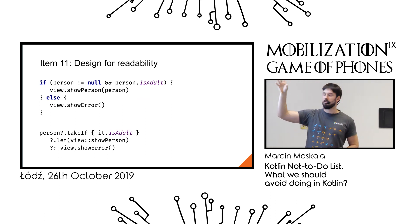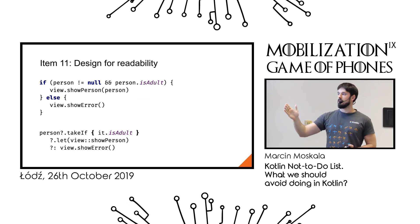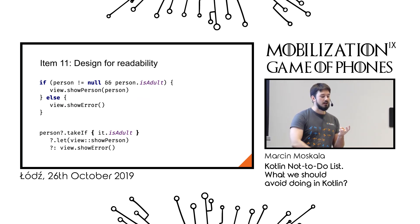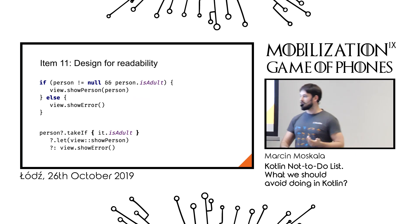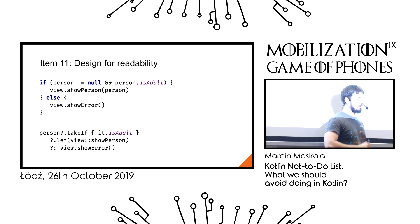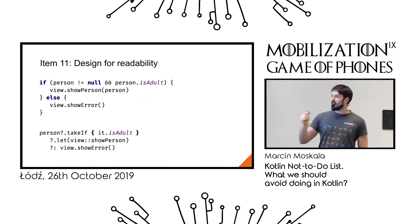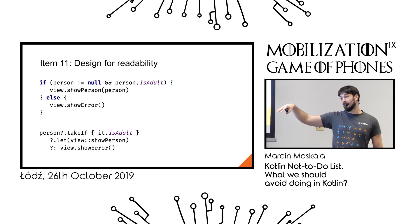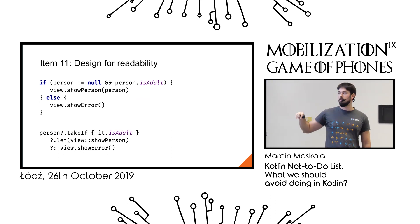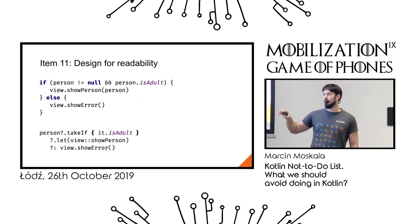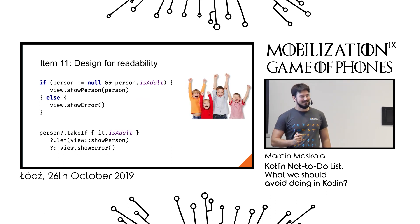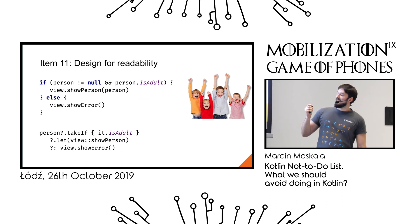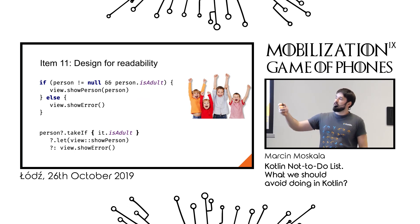The first implementation is understandable by everyone, even a junior developer. To understand the second one, you need to understand safe calls, takeIf, let, bounded function references, the Elvis operator, and the unusual construction of an Elvis operator with an expression on the right side. Even as an experienced developer, I need to read it slowly, word by word. The first one — you see it, you understand it immediately. It's understandable by everyone, even JavaScript developers.